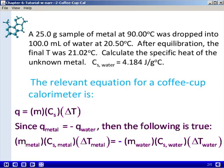The relevant equation for a coffee cup calorimeter says that the amount of heat transfer, Q, can be calculated as the product of the mass times the specific heat capacity, C_s, times the change in temperature represented here as delta T.